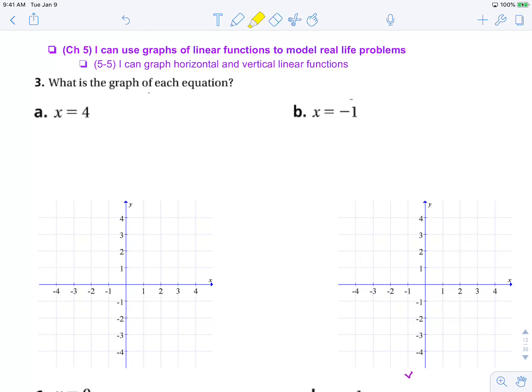Now we're going to practice graphing horizontal and vertical lines. If we start to investigate the line x equals 4, we could make a quick table and plug in some points to see what this graph will look like.